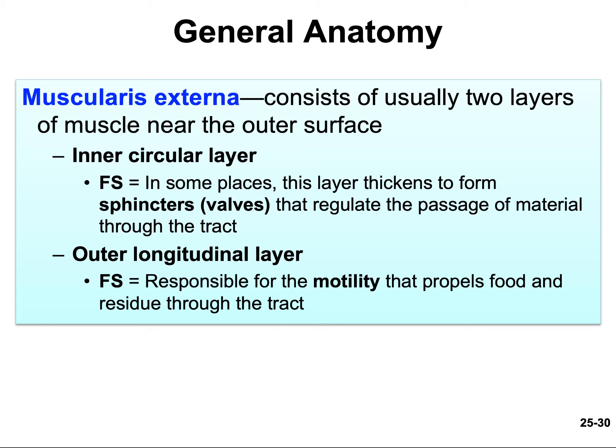The outer longitudinal layer causes the digestive tract to get shorter when it contracts. When it gets shorter and then longer, it helps move materials through the digestive tract. The two layers working together are necessary: the inner circular can squeeze behind the food, and the longitudinal can contract and move the food along. This is a bit like how earthworms move — a series of circular and longitudinal contractions. As a side note, the layers were actually the opposite in an earthworm — inner longitudinal and outer circular.